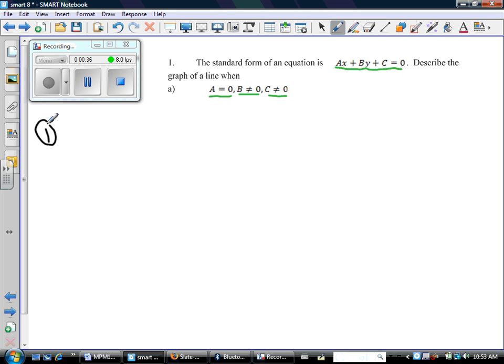Some examples: A has to be zero, so I know I have 0x. B can be anything I want except for zero, so let's say B is 2. And same thing with C, let's say it's 6. So there's one line that satisfies these rules.